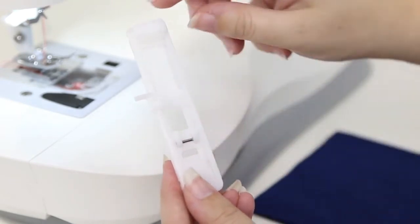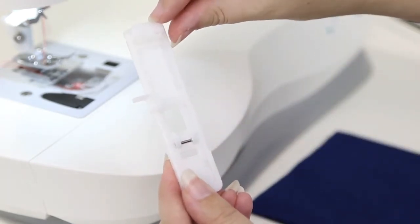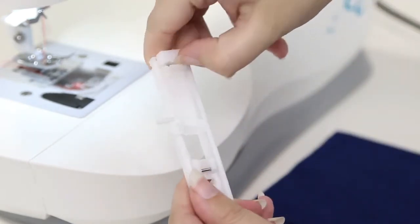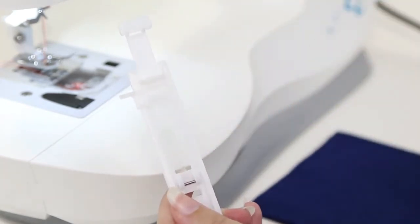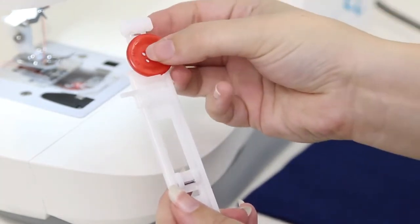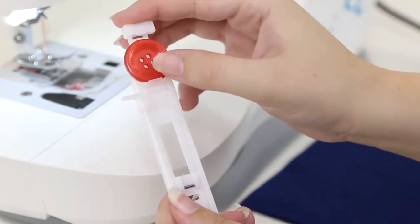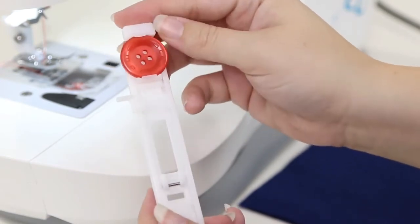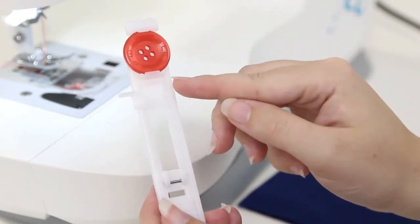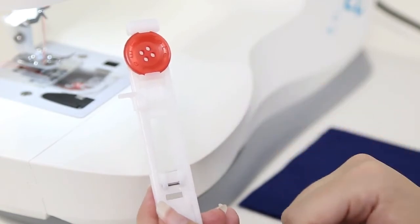To use this foot, you will see a button illustration at the top. Pull on that so it comes out. Place your button inside and press down so that it is snug. This means that the machine will make a buttonhole perfectly sized for your button.